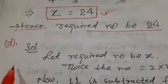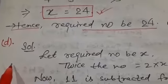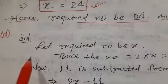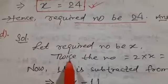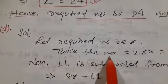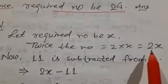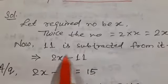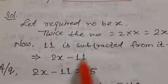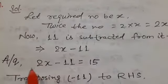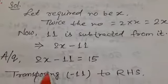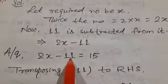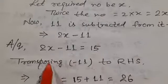The next question is: when I subtracted 11 from twice a number the result is 15. Let the required number be x. Twice of this number equals 2x. Subtracting 11 from it gives 2x − 11. According to the question this result is 15, so the equation is 2x − 11 = 15.